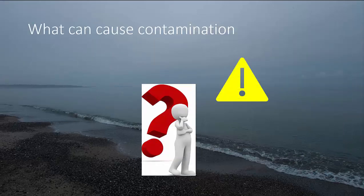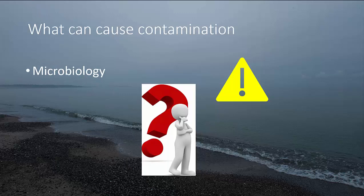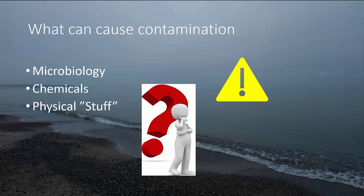So what can cause contamination? Three things: first, microbiology; second, chemicals; and third, something I labeled physical stuff. Before we go into what they contain, we'll have a look at where and how contamination can happen in the production chain from intake to tap.